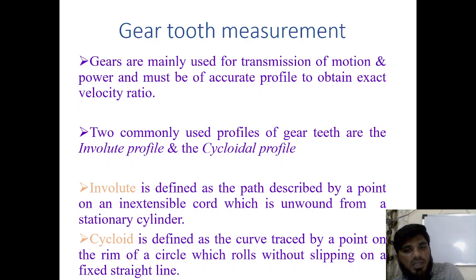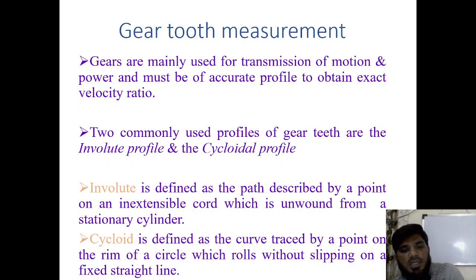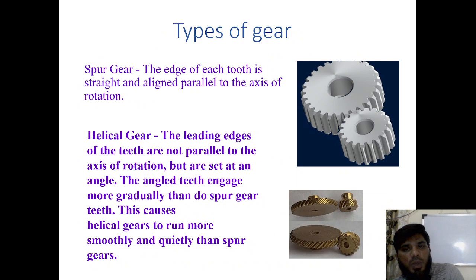The involute profile is the path described by a point on an inextensible chord which is unwound from a stationary cylinder. The cycloid is the curve traced by a point on the rim of a circle as it rotates without slipping along a straight line.